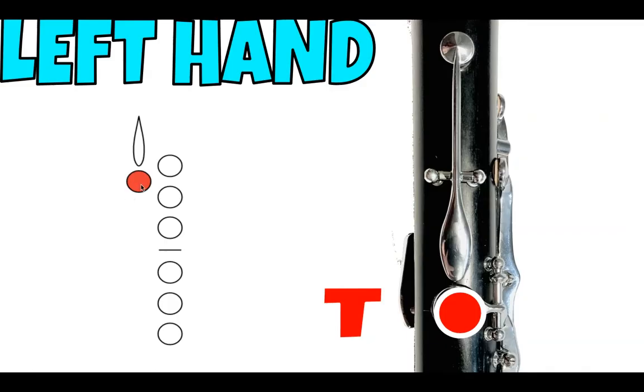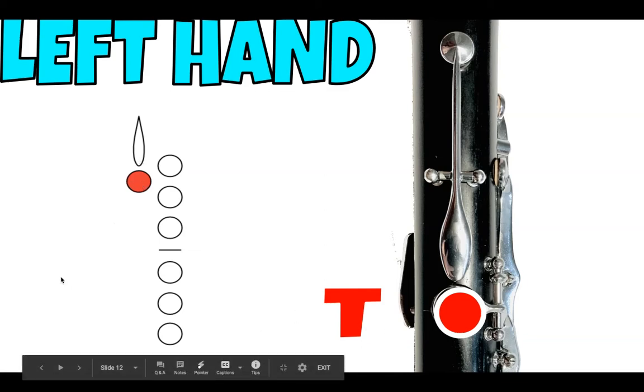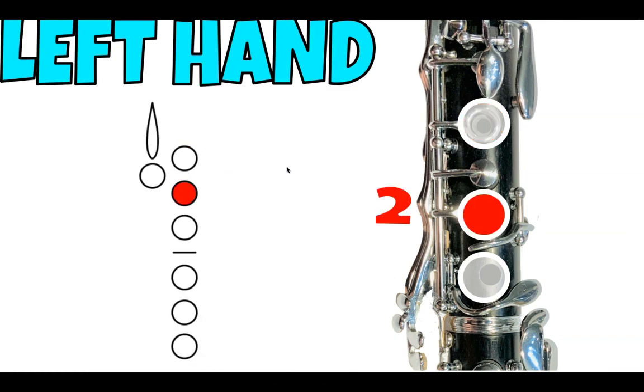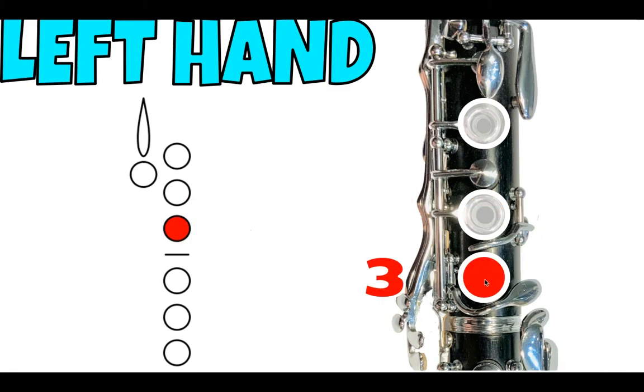On the left, you see the thumb hole and key. If the hole is covered in, you're going to cover it with your thumb. Towards the right, the first hole is your first finger. The second circle is your second finger. The third circle is your third finger.